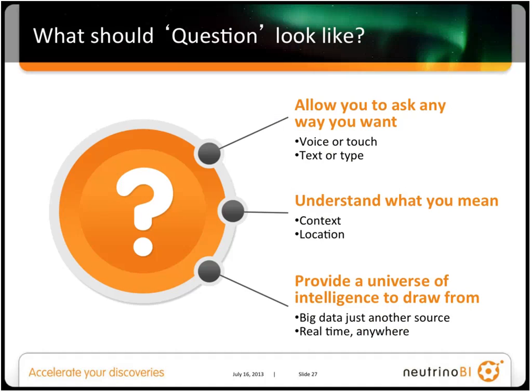What makes a smart tool easy to question? Number one, you get to ask it in any way you want. Today, Neutrino BI allows natural language-based search, very much like a search engine. We are the first vendor to allow this free-form questioning of BI data. But we're not stopping there — we want to be able to use voice, touch, and immersive ways to ask questions.